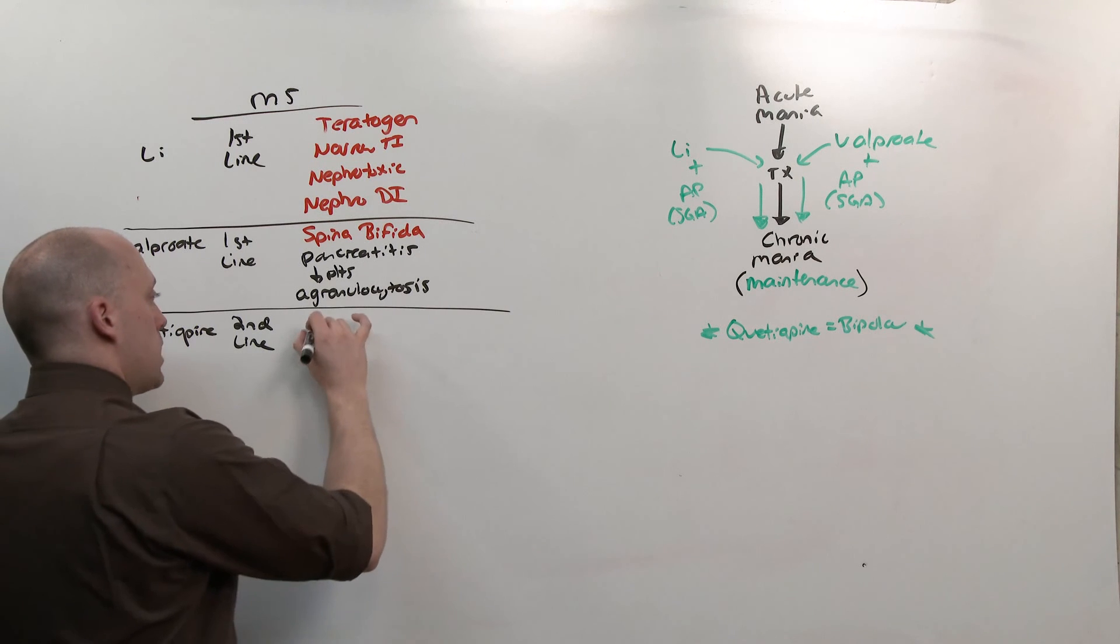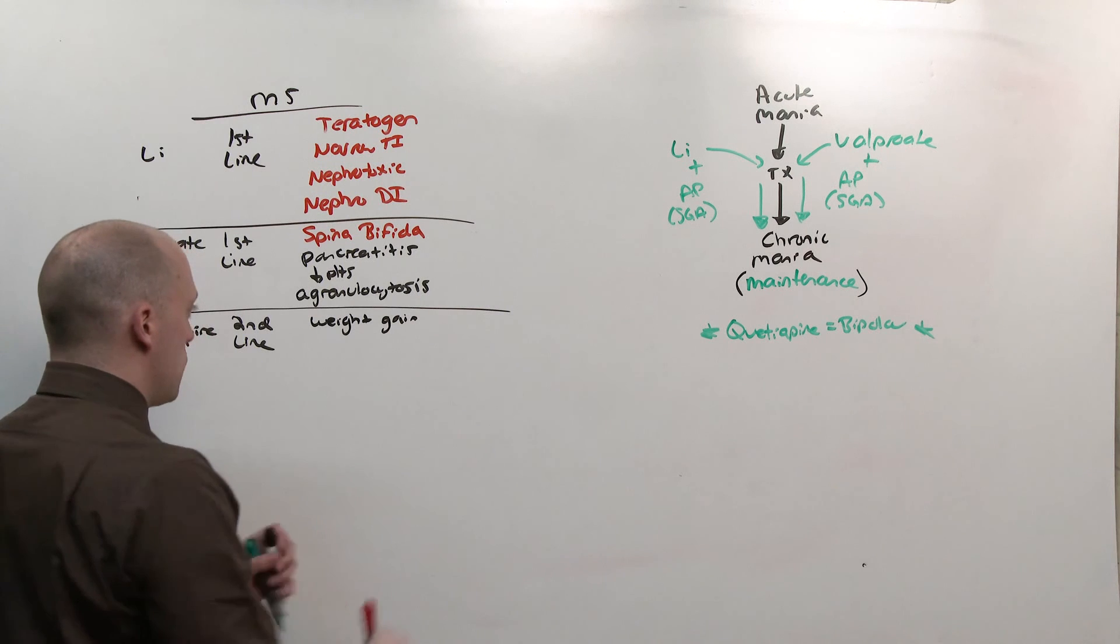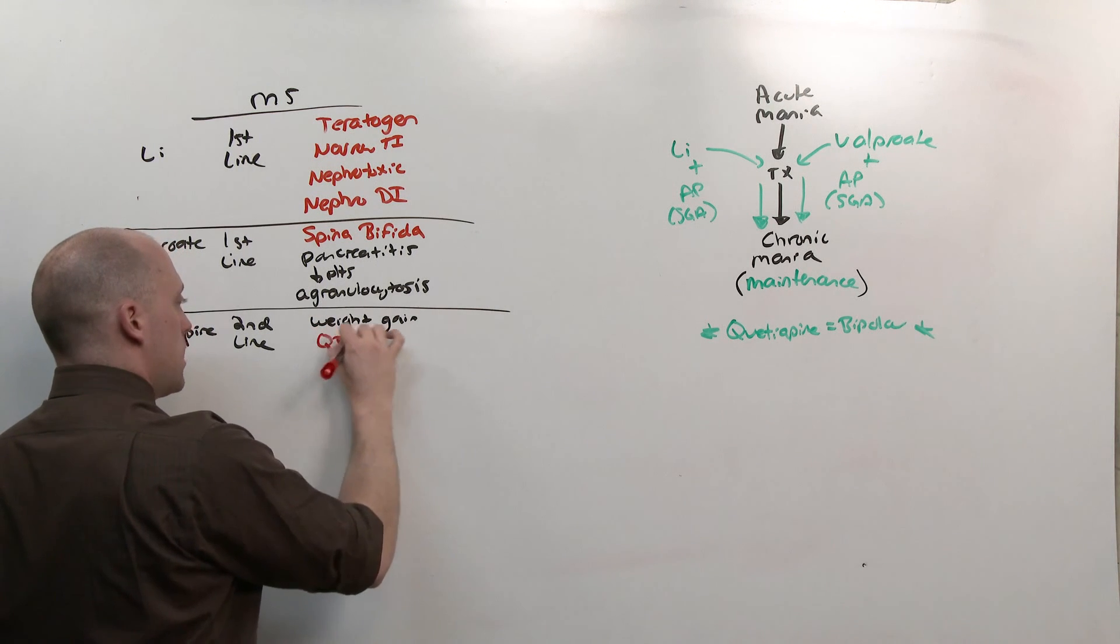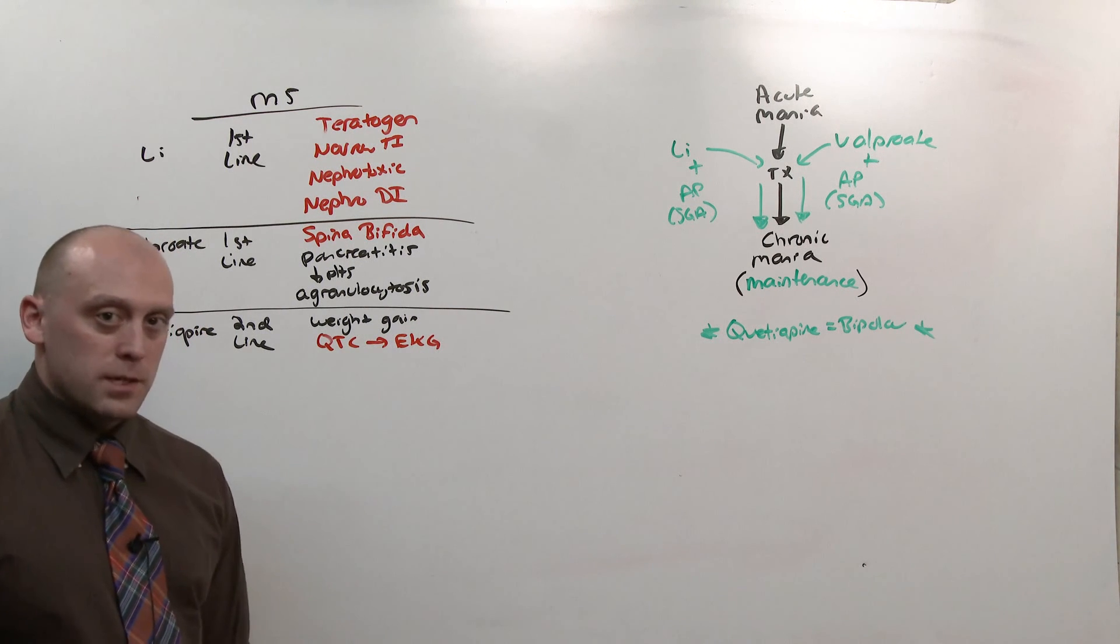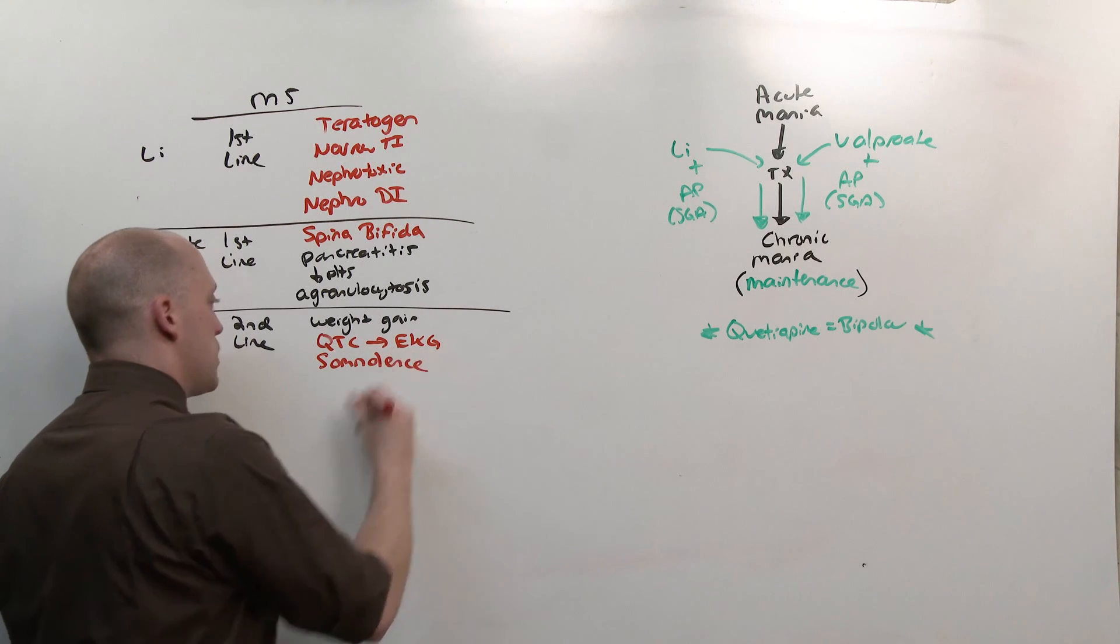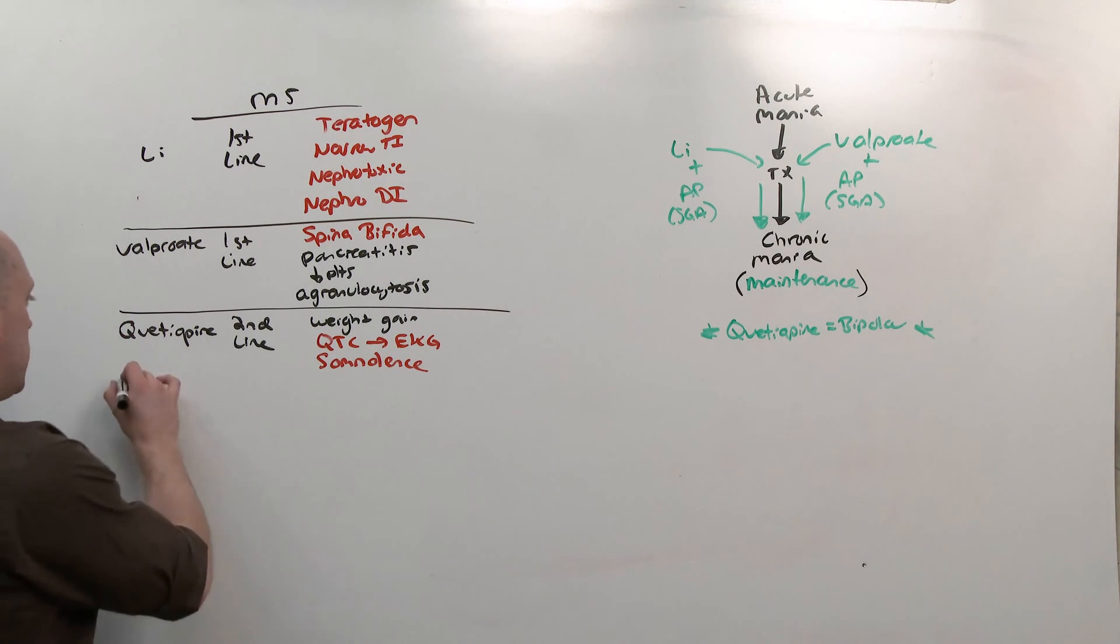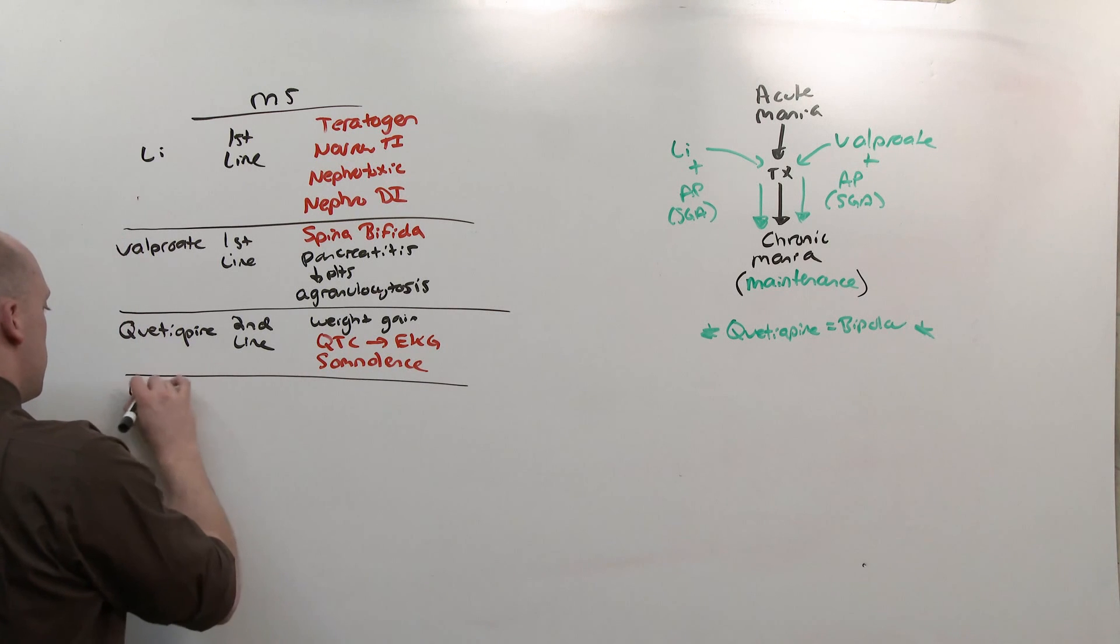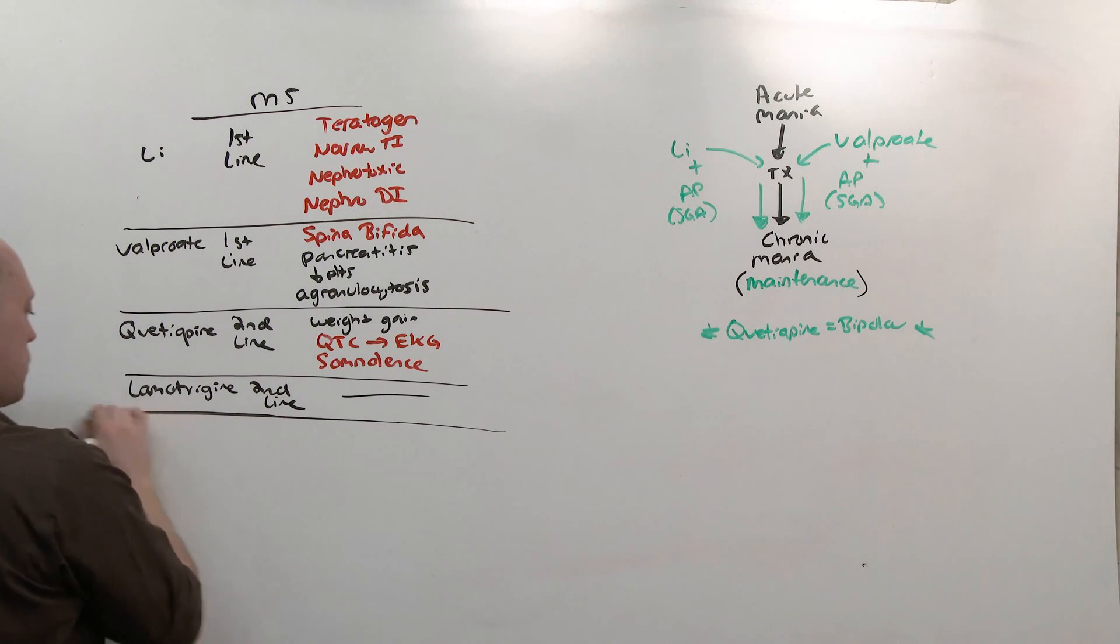Being a typical antipsychotic, you have to worry about things like weight gain, prolongation of the QTC, which means you have to get an EKG before starting. Quetiapine is known for its somnolence and can be used to treat insomnia, but it's generally considered a side effect of treating mood disorders. And the other second line agent is lamotrigine, which is generally considered a second line, and there's no side effect you have to remember because it's generally considered very clean.